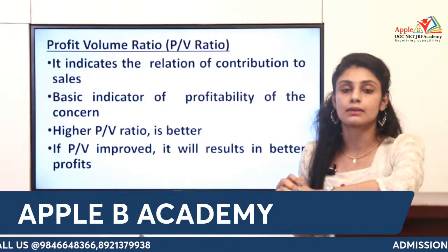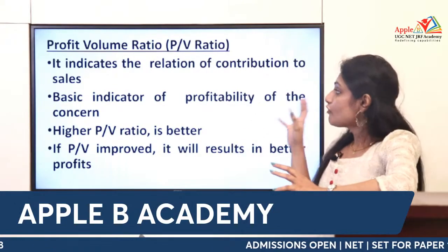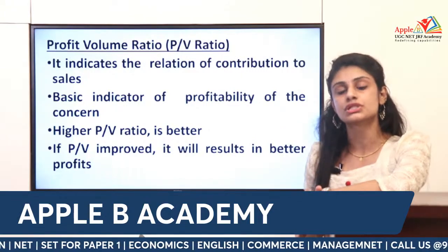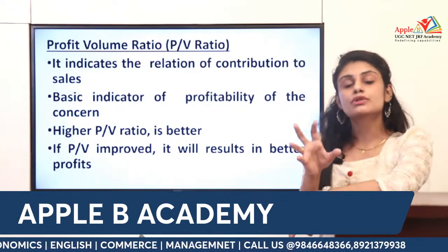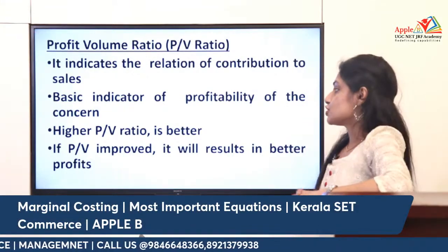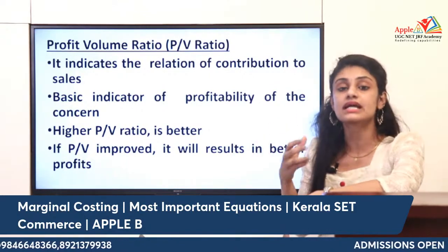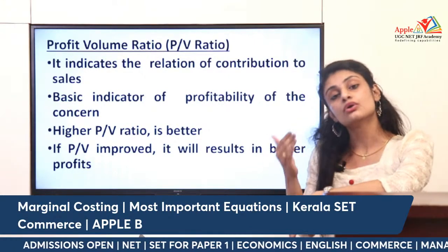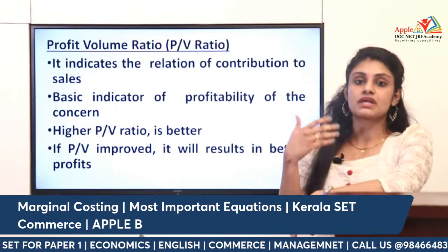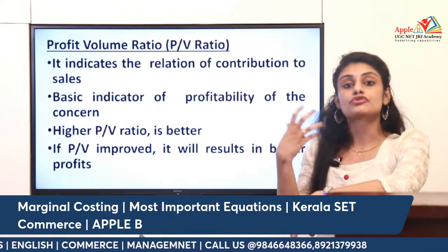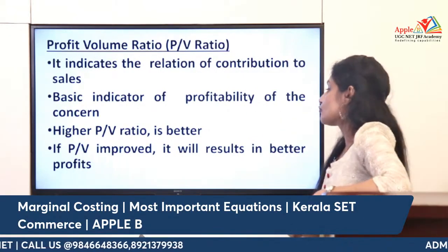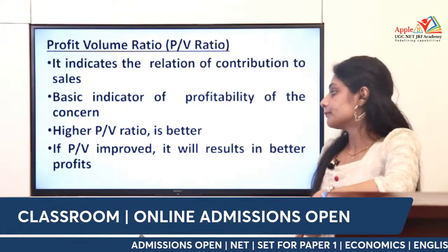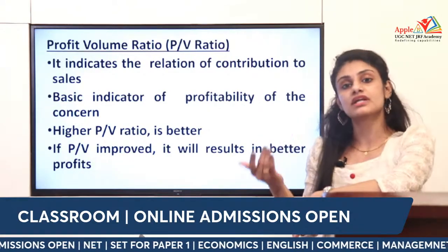The first ratio is the PV ratio — the Profit Volume ratio. PV ratio shows the relationship between contribution and sales. It is considered a basic indicator of the profitability of a concern. A higher PV ratio is better because it means improved profitability and better profits.